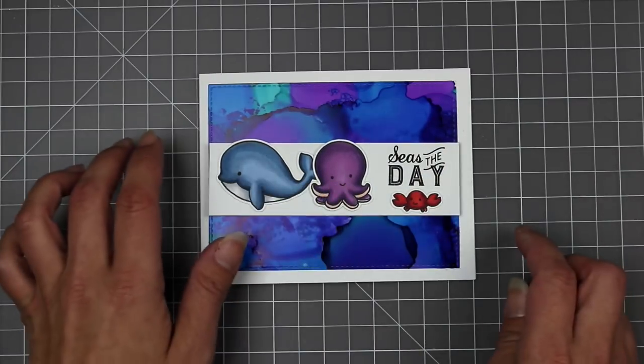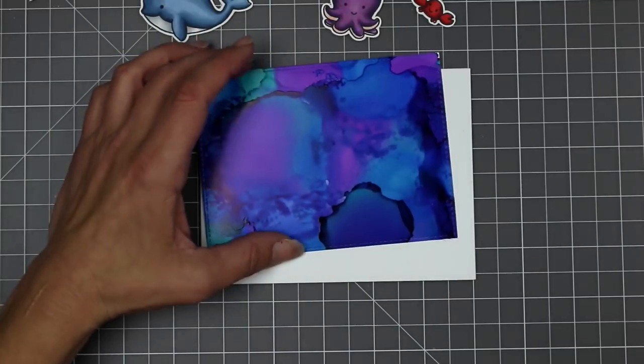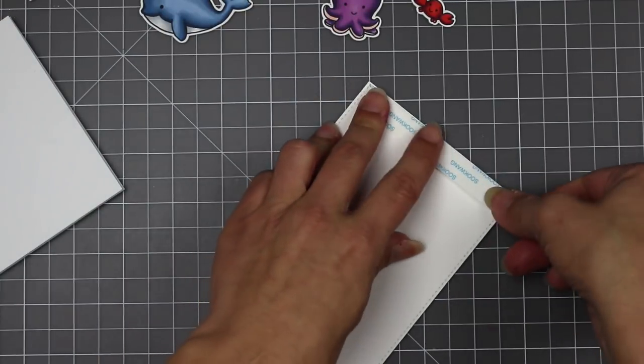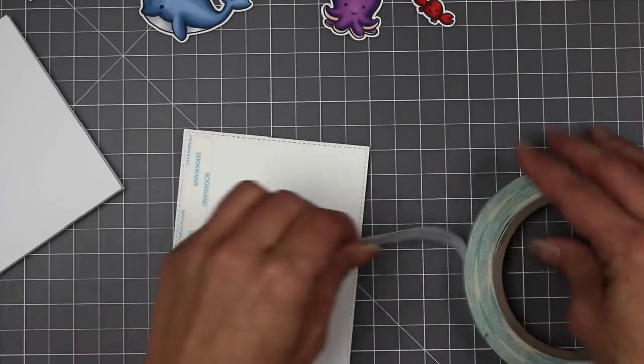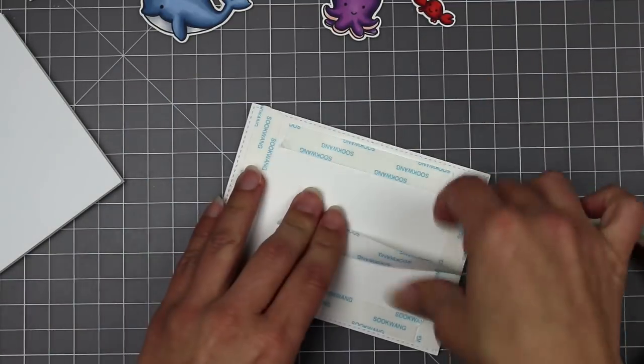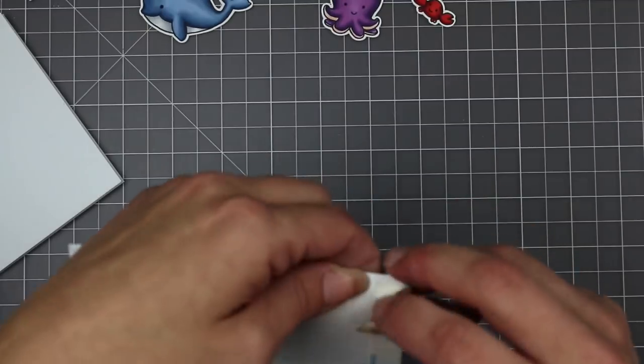So I thought adding this white strip was a nice way to incorporate my critters and still have this gorgeous background. And my little crab looks like he's holding up the sentiment, which I thought was just really fun how that worked out. So I'm going to go ahead and attach all of this. I'm using some double-sided tape to just make sure that sticks down really well. I believe this is the half inch. This holds really good. This is one of my favorite adhesives.